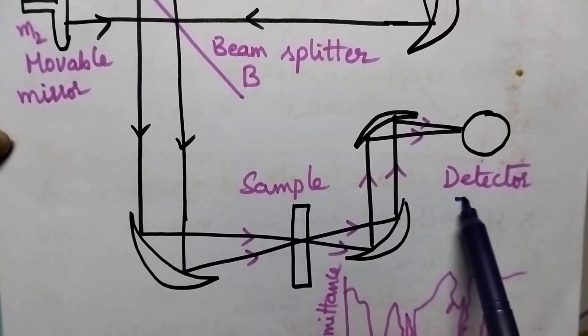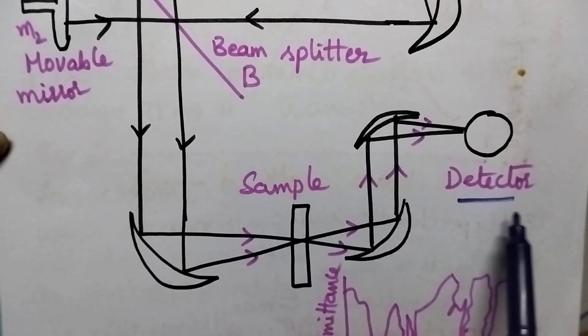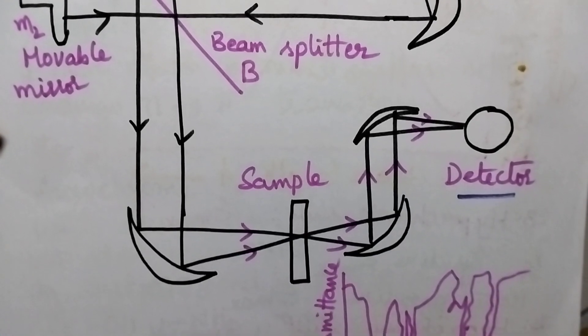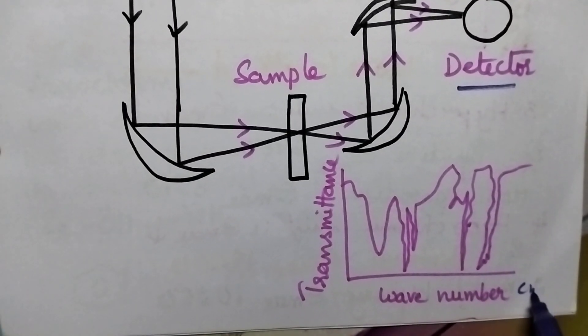With the help of the detector, the percentage of transmittance will be detected. Automatically, a graph will be drawn between the wave number and the transmittance.